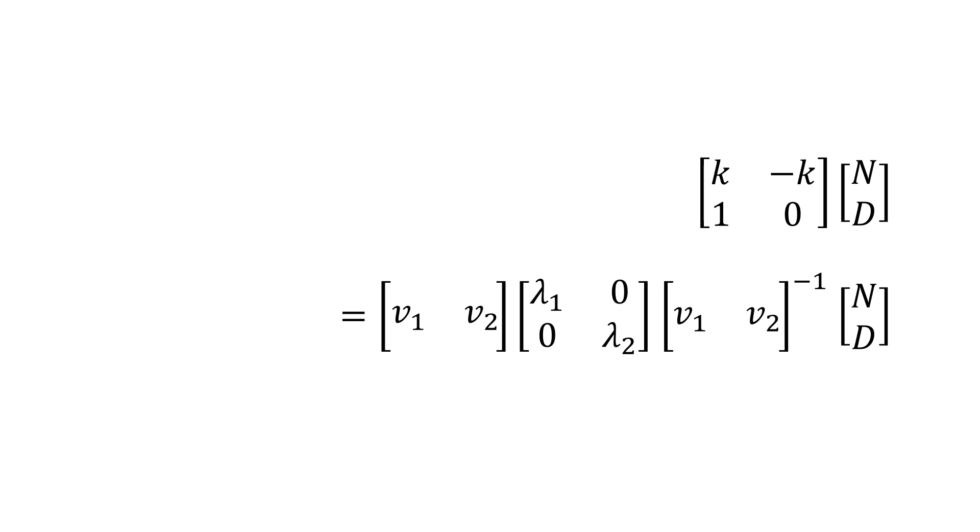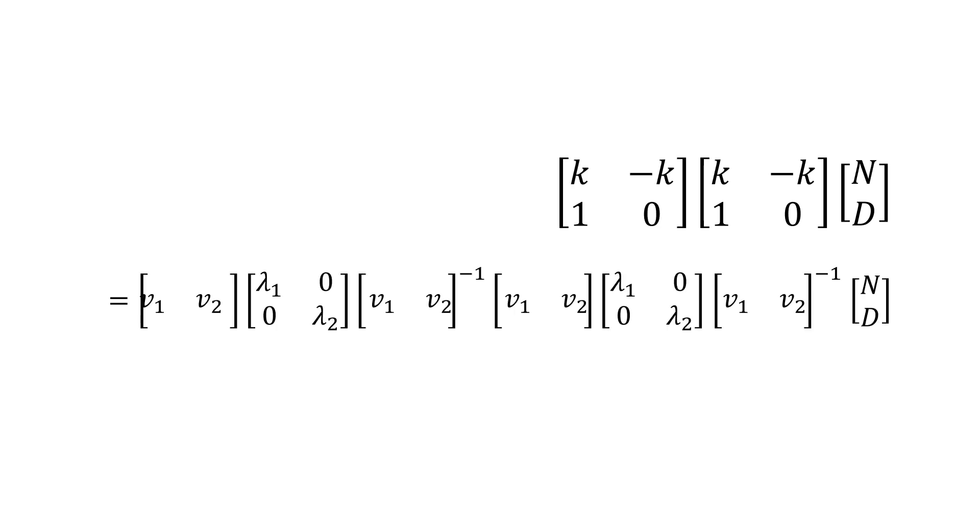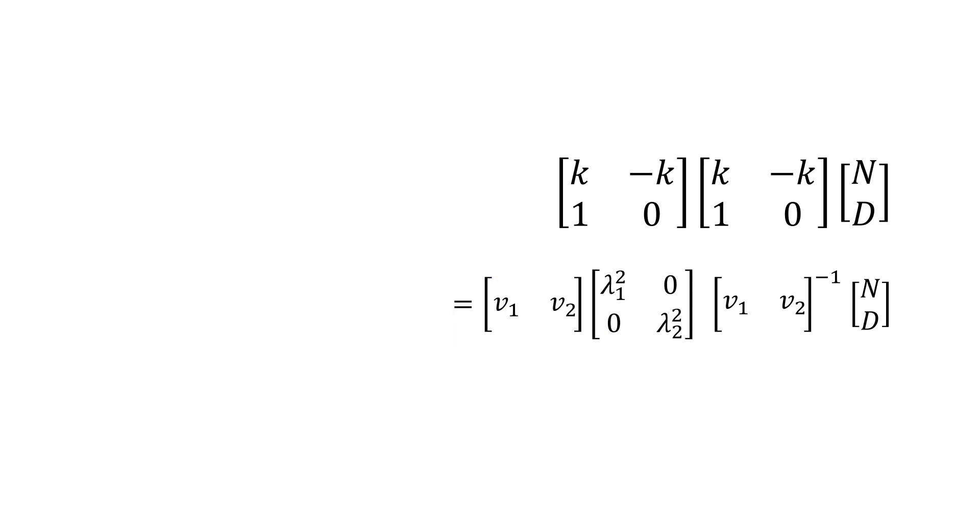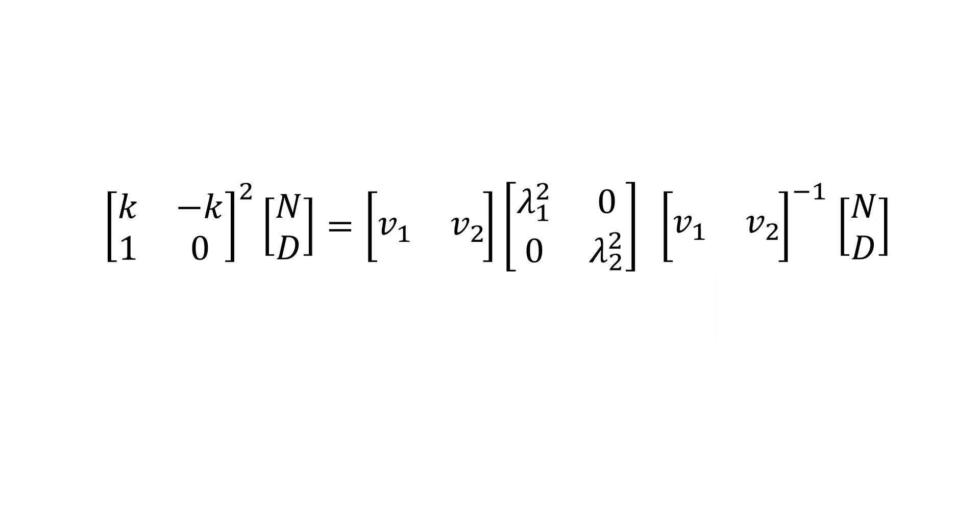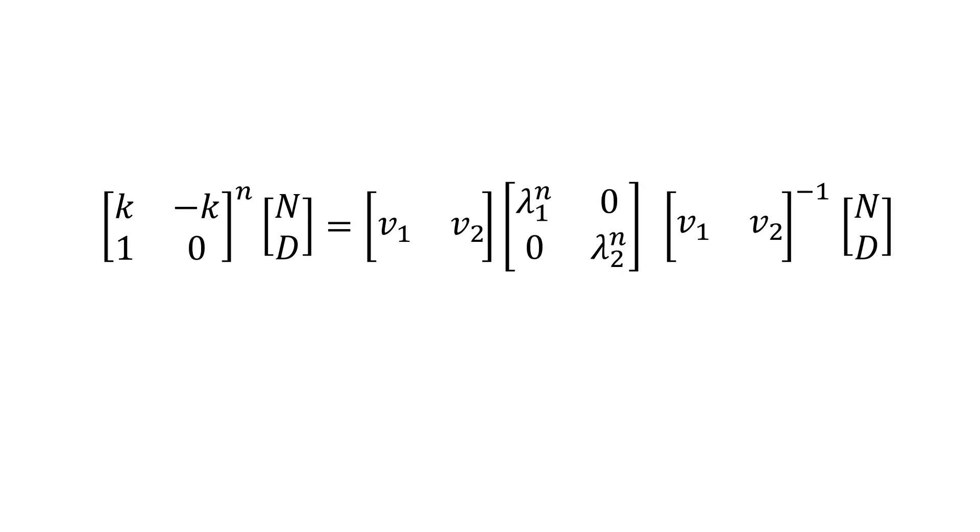What happens when you apply the transformation more than one time? Well, as you can imagine, this just means that we scale those eigenvectors more than once. And this is what happens algebraically as well. Since the left and right hand side represent the same transformation of our vector, they're equal. And this holds in general, no matter n.